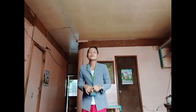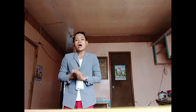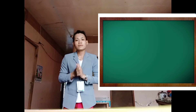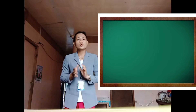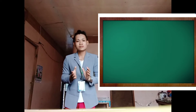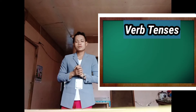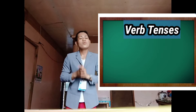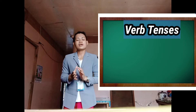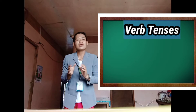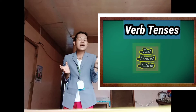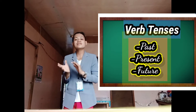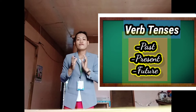Okay, did you get it? Class, for today I will be discussing with you about verb tenses. What can you say when you hear the word verb tenses? Okay, very good. When we say verb tenses, it refers to when the action in the sentence takes place, whether it happened in the past, is happening in the present, or will happen in the future.